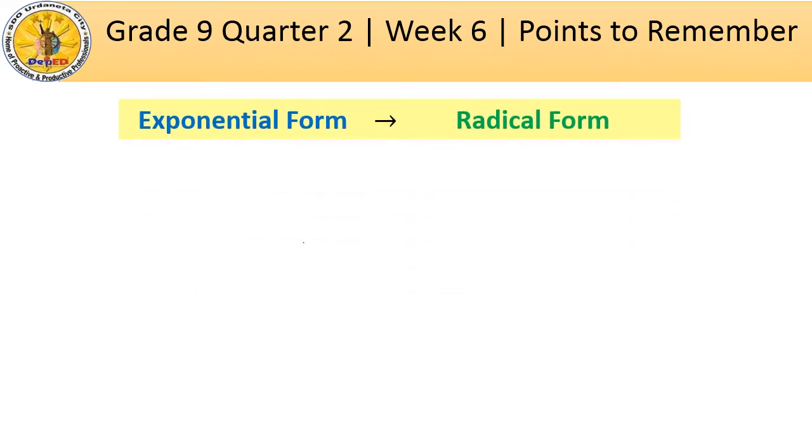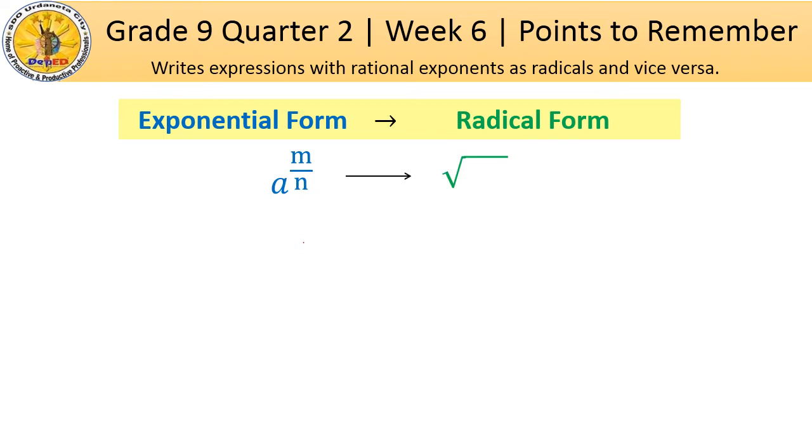Now, let's proceed with writing expressions with rational exponents as radicals and vice versa. So, from exponential form to radical form. In radical form, laging mayroong radical sign. Then, radicand a raised to m.